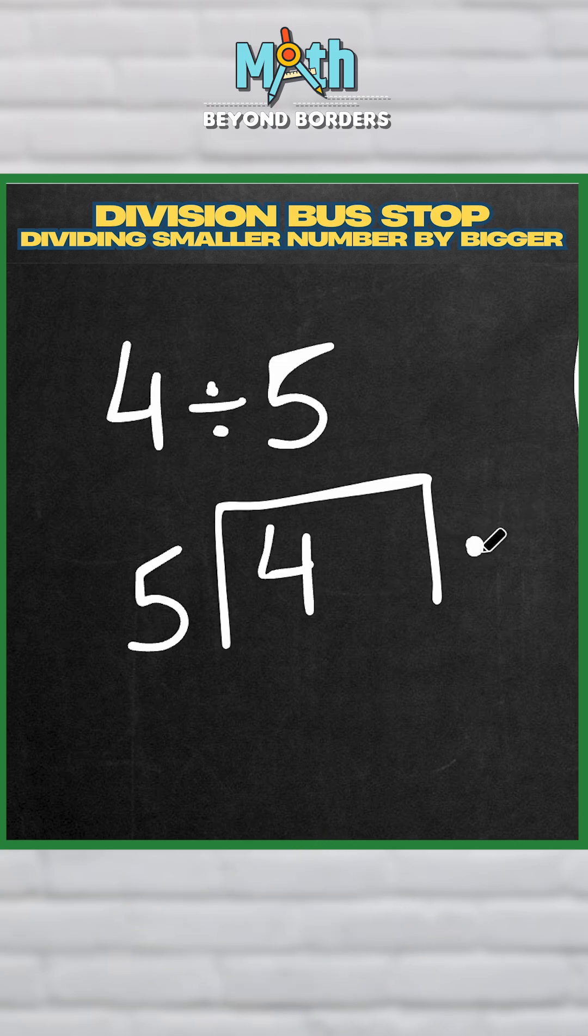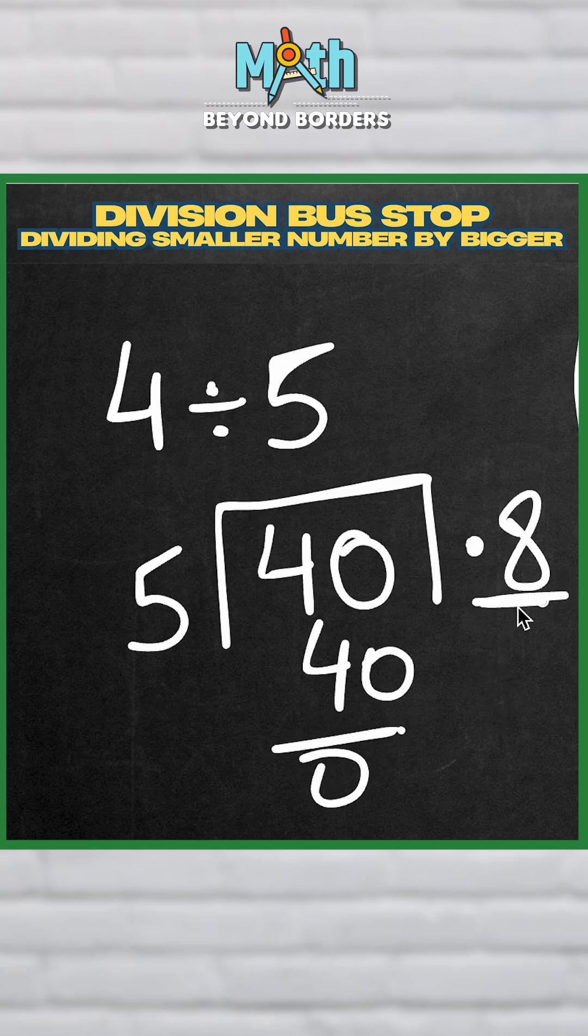Now the fun fact with decimal is that once you have put the decimal, with and after the decimal one zero goes free. What does that mean? So with decimal, as I put a decimal, I can give one zero here for free. And now 5 times 8 is 40, so that's my answer: 0.8.